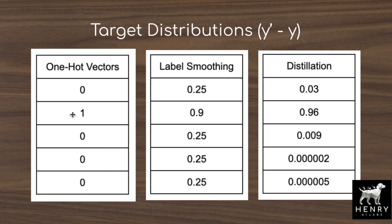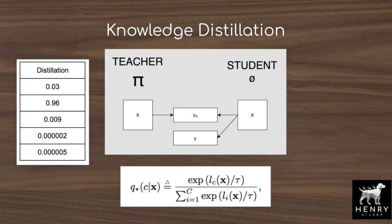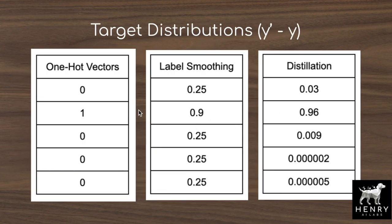One solution to overfitting with one-hot vectors is label smoothing, which applies a uniform weight to all other class labels. Another solution is knowledge distillation — self-training with noisy student currently holds state-of-the-art for ImageNet classification and is also powerful for model compression, such as DistilBERT. The student network learns from a combination of the distillation class distribution and the ground truth one-hot encoded vectors.